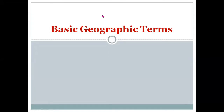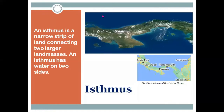Now we are going to discuss in detail these basic terms of geography. Number one is the isthmus. An isthmus is a physical feature — a narrow strip of land connecting two larger land masses, with water on two sides. So an isthmus is a land feature which connects two larger land masses, and it has water on both sides. It is a narrow strip of land which has been connecting two water bodies, and the water bodies on either side are typically larger ones.